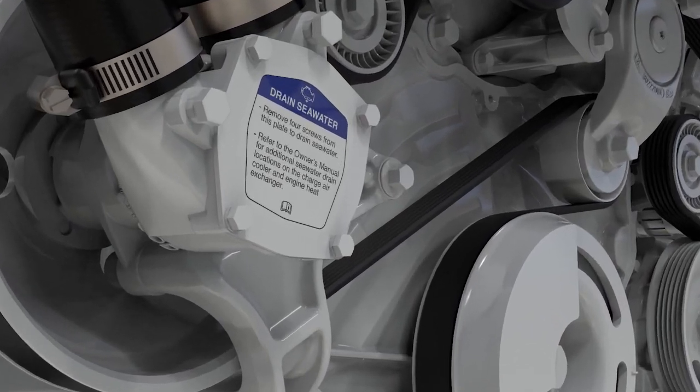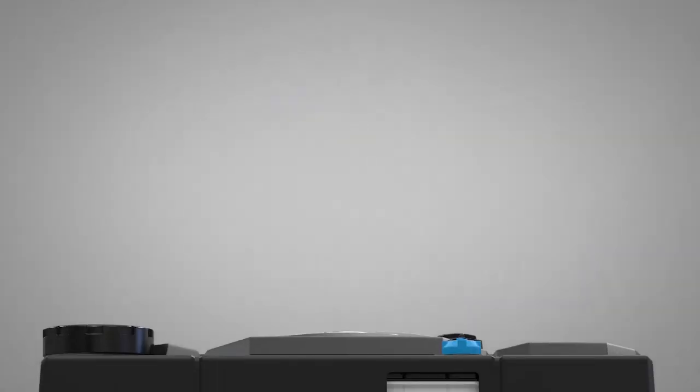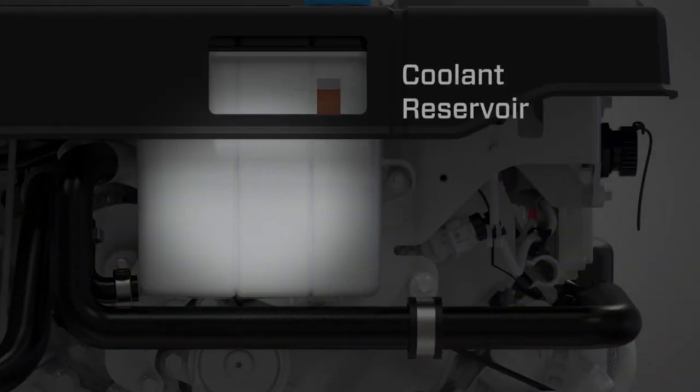The raw water pump is located on the front side of the engine. Also on the front side of the engine is the high-pressure fuel pump and coolant reservoir.